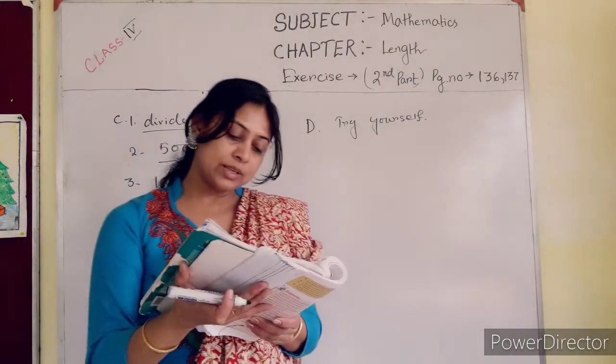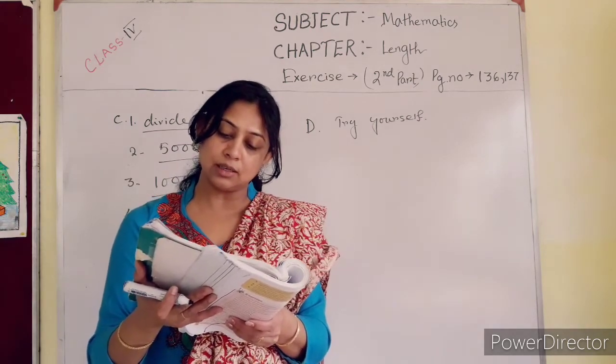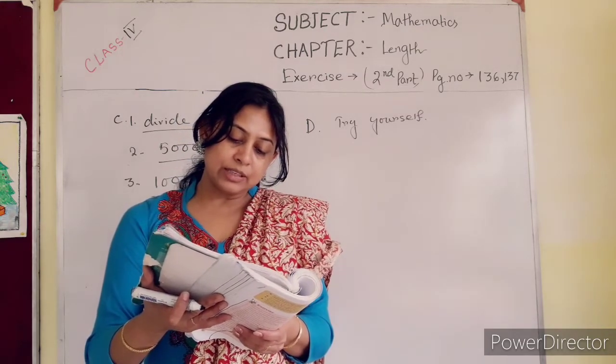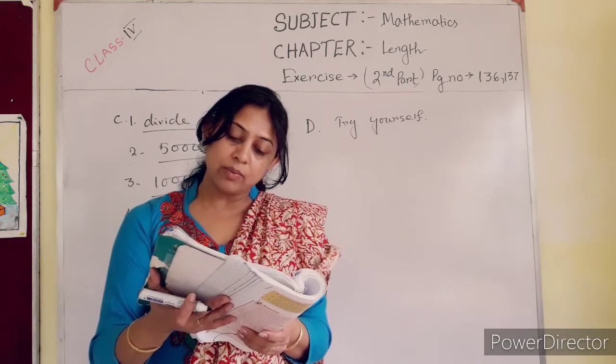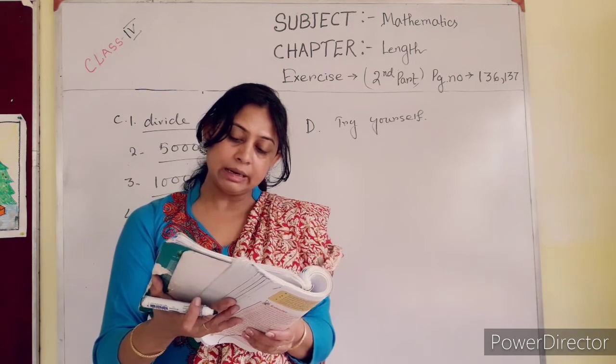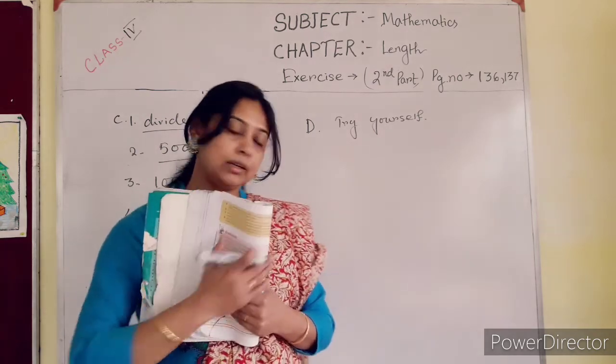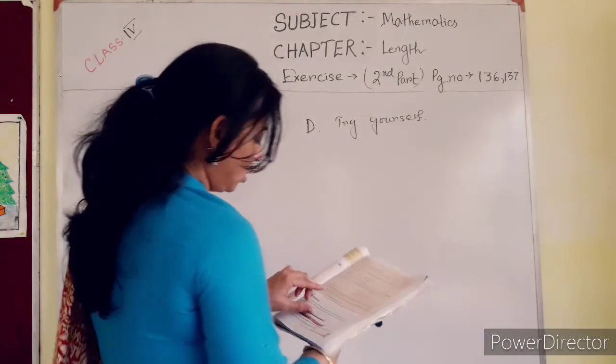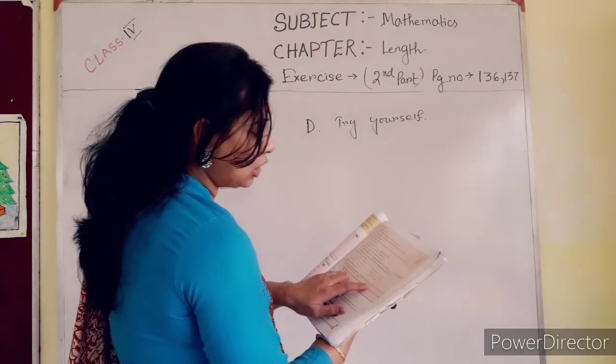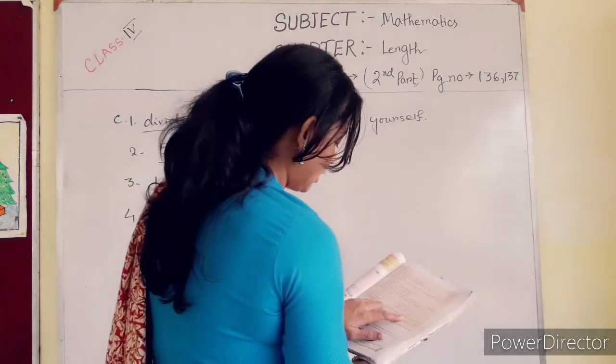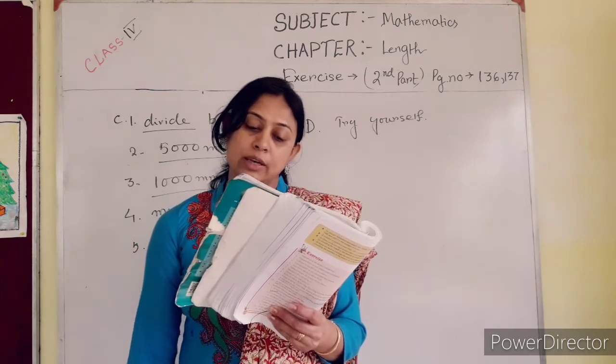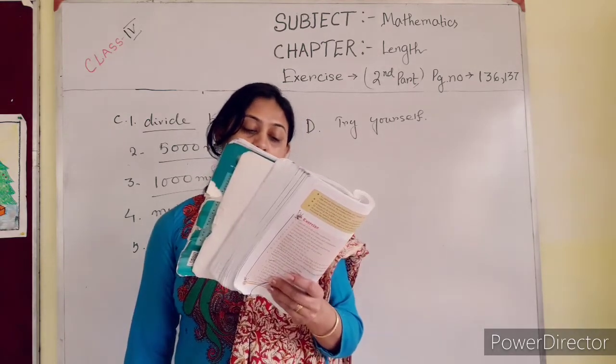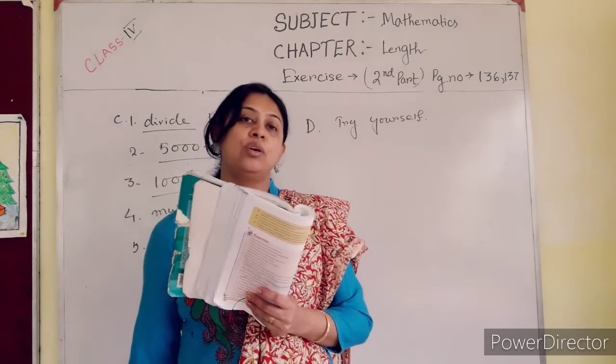Number E, value-based question. The distance between the school and house of a student is 1 kilometer 875 meter. Every day he cycles to and fro and reaches the school on time. Find the distance covered by him in a week which had 5 working days. He attends school on all days. 5 working days, we will have to multiply this one by 5. Okay? First, you convert 1 kilometer 875 meter into meter, 1875 meter. Then you multiply this number by 5 and you will get your answer. What value of the student is depicted here, you have to write this one. Okay?